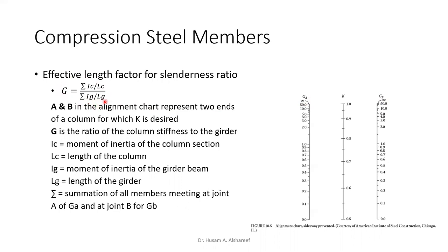That's how you find G. G_A stands for one side of the column, and G_B is the other side of the column. To find K, once you find the values of G_A and G_B, you cross them on the alignment chart. Wherever the line lands on that diagram, on that scale, that's your K value.